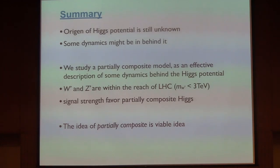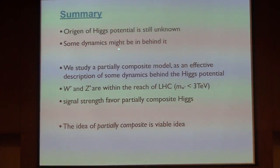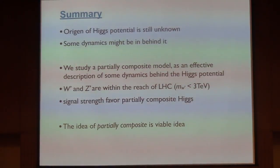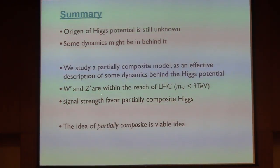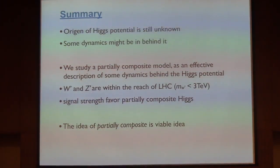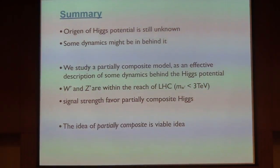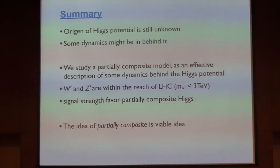To summarize: we don't yet know the origin of the Higgs potential. In this model we assume some dynamics lies behind it and construct an effective description. We find that W' and G' are within the reach of LHC, and the Higgs signal strength is compatible with a partially composite Higgs. The idea of partial compositeness is therefore viable, and W' and G' may be found in the future if this idea is correct. Thank you.